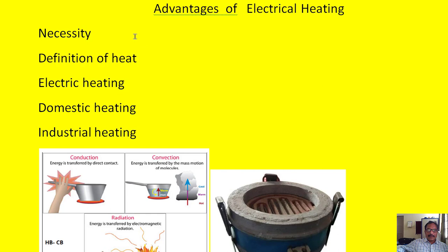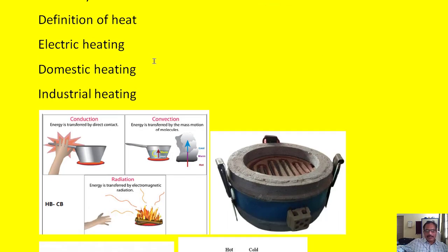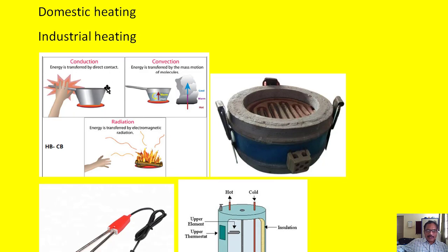Coming to the definition of heat — heat is nothing but transferring energy from a high temperature body to a low temperature body. There are three methods of heat transfer: one is called conduction, the second is called convection, and the third is called radiation.